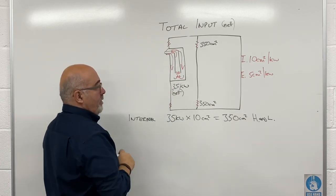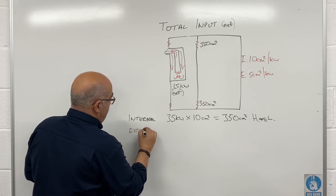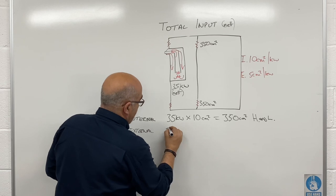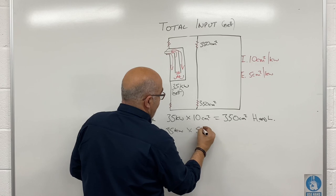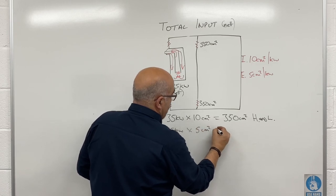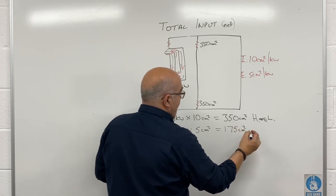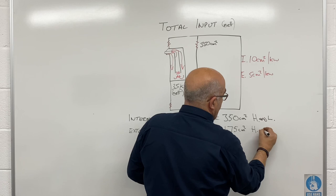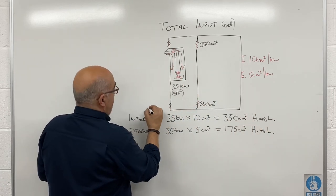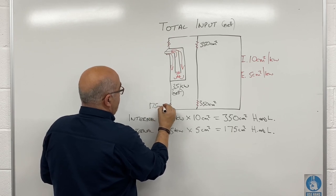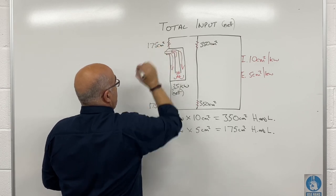Externally, using the same boiler: 35 kW total input multiplied by 5 cm² equals 175 cm² of free area. Again, that would be high and low — 175 cm² at the top and 175 cm² at the bottom.